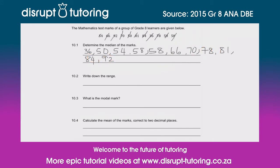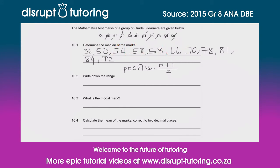When we work out the middle number, the rule we follow is (n + 1) ÷ 2, and that gives us the position of the middle number. n is the total number of marks — we've counted 11. So 11 + 1 = 12, divided by 2 = 6. The sixth number is our middle number: 1–2–3–4–5–6. Therefore the median is equal to 66.